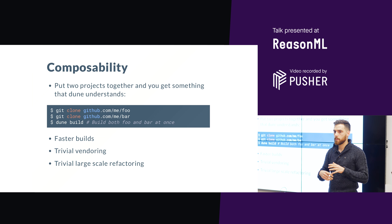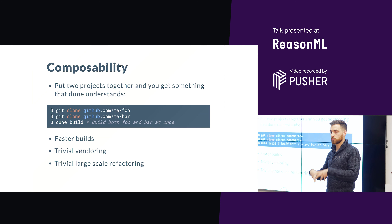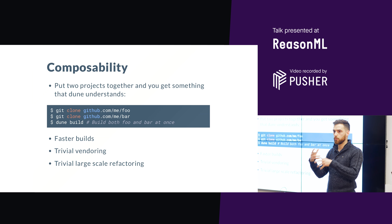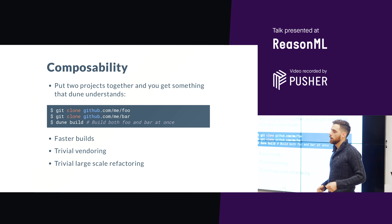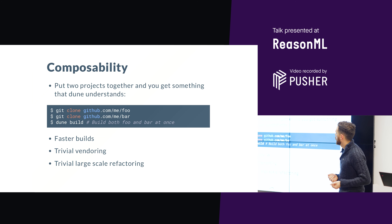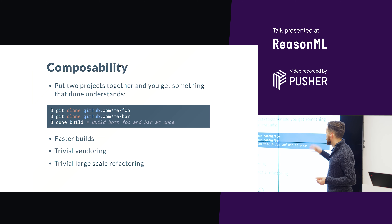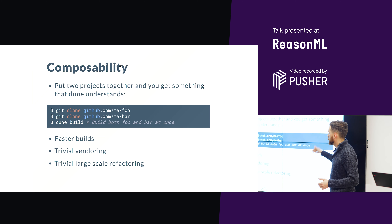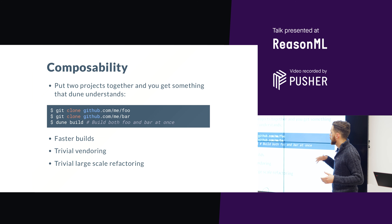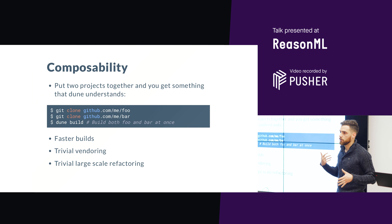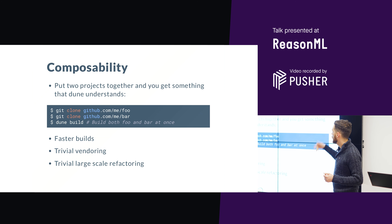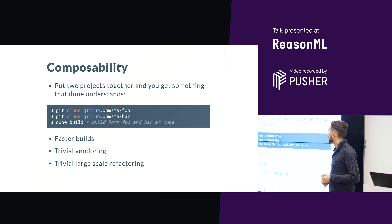The cross-project development was really painful — I had to go through the first project, make some changes, build it, install it, then go to the second project, make more changes, build it, install. This was very, very frustrating. When I started building Dune, I just put in everything I wanted to have, and this composability aspect was one of them.